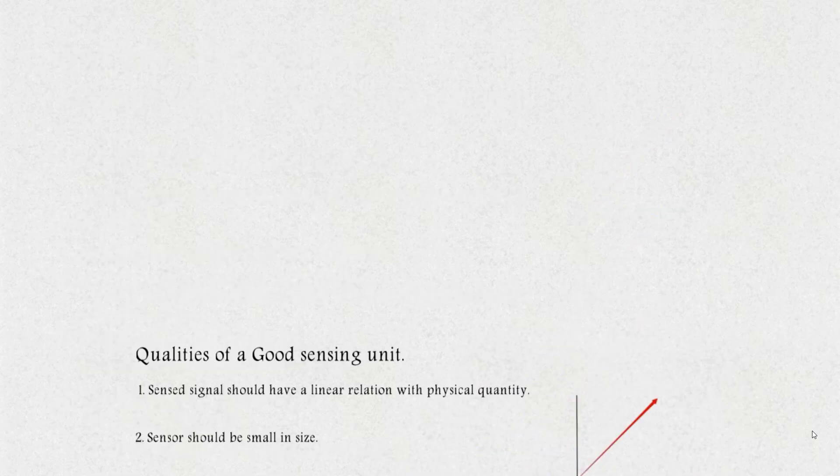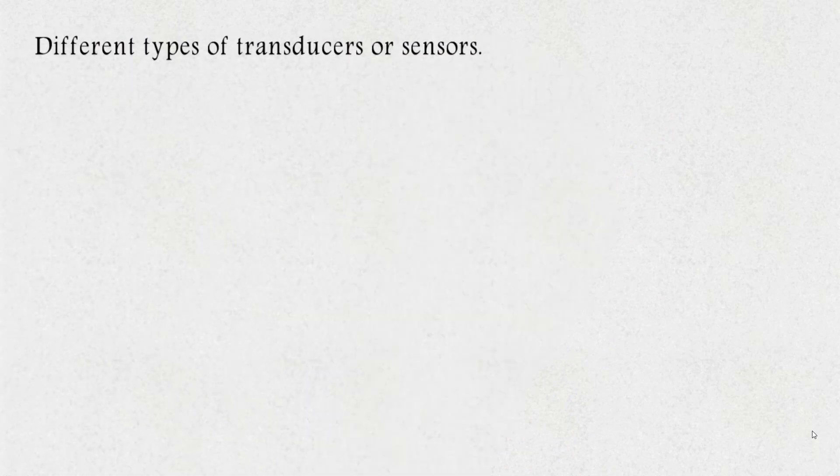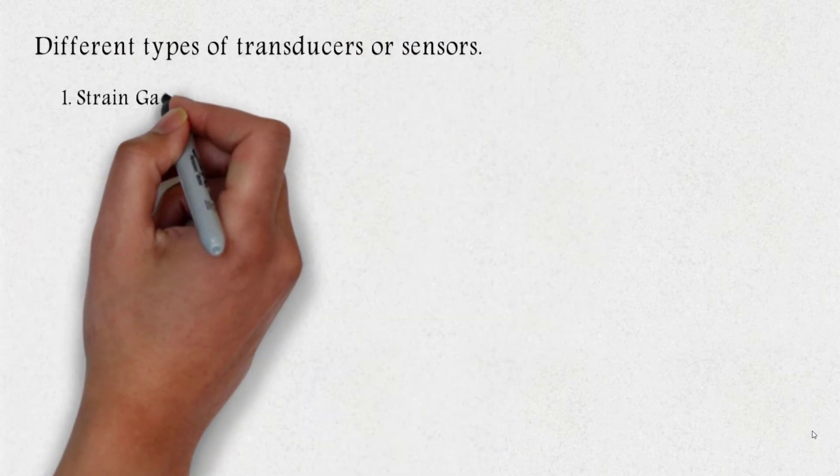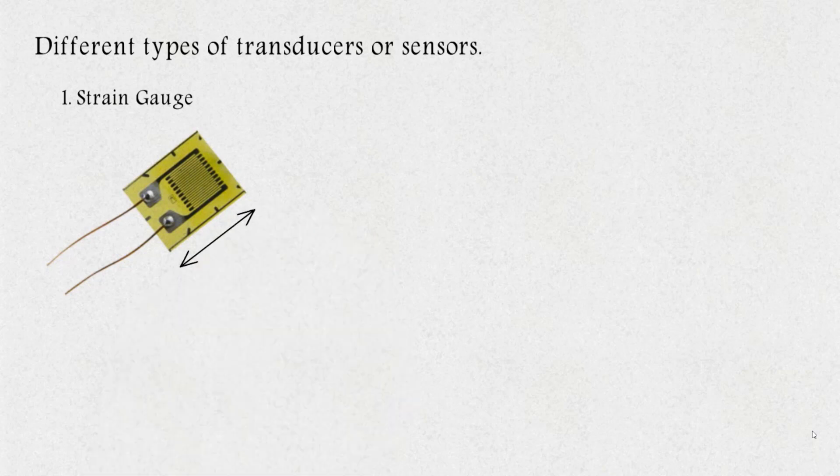Let us continue with the different types of transducers or sensors. Number one, we have strain gauge. Strain gauge is an example of a passive transducer, that is, which requires external power. They use electrical resistance variation in wires to sense the strain produced by the applied force on wire. It can be used to measure weight, pressure, force, displacement, etc.